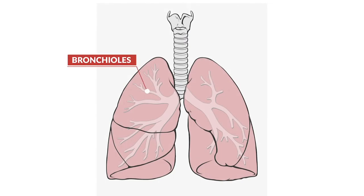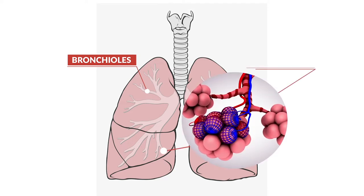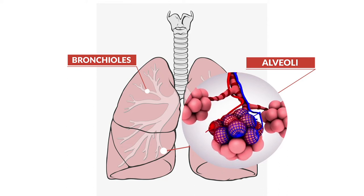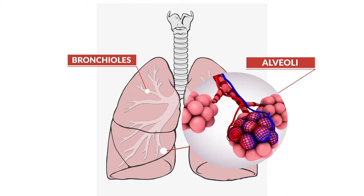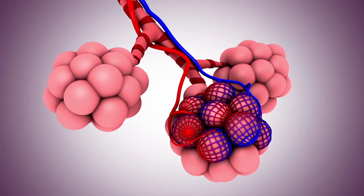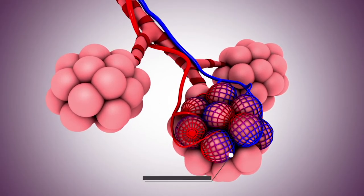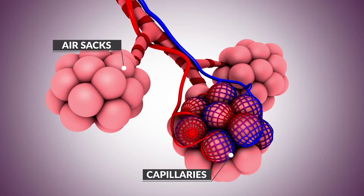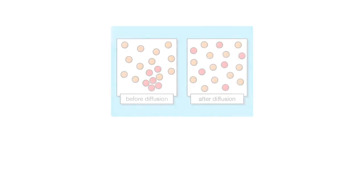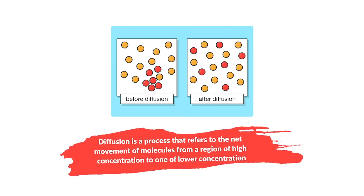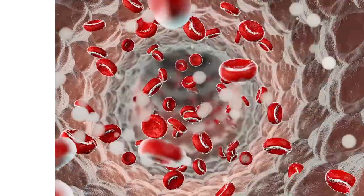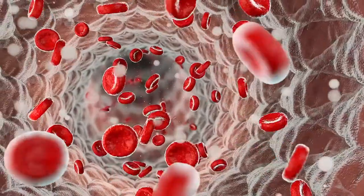These small tubes divide into thousands of tiny passages called bronchioles. At the end of each bronchiole are little air sacs called alveoli. They are wrapped in capillaries full of red blood cells and contain special proteins called hemoglobin. At this point, the capillaries are full of carbon dioxide and the alveoli full of oxygen. But due to the basic process of diffusion, the molecules of each gas want to move to a place where there's a lower concentration of their kind.